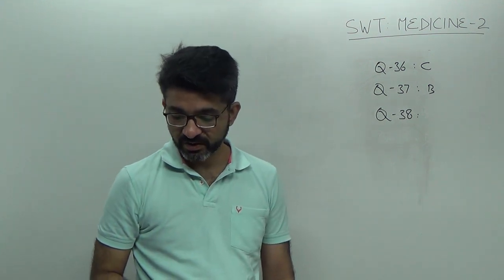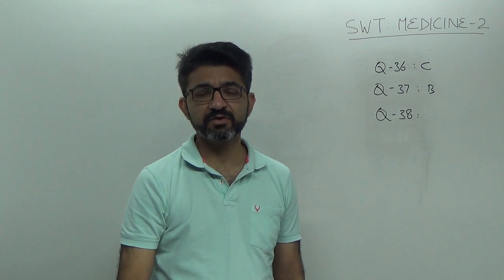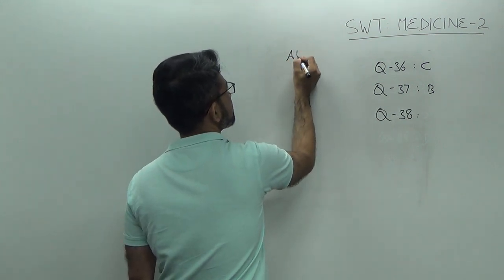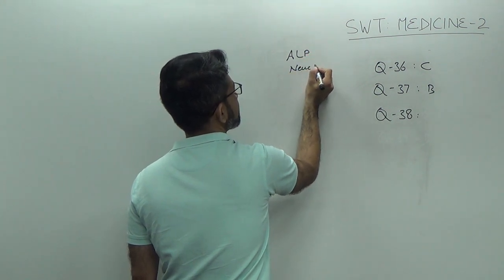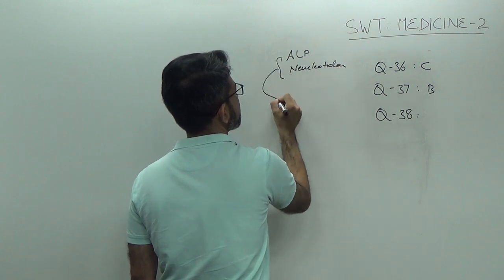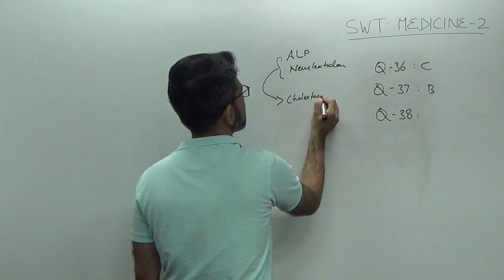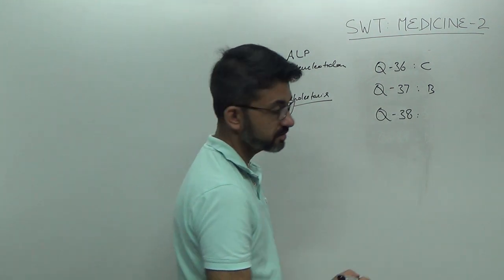Question number 38, 5-nucleotidase activity. It is a marker of cholestatic disorder. So, alkaline phosphatase, 5-nucleotidase. They are marker of cholestatic disorder. So, this answer is D.